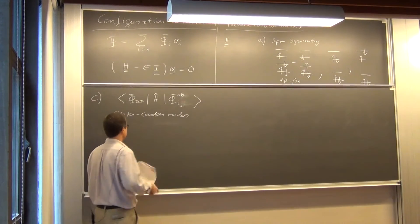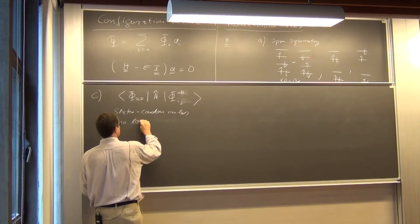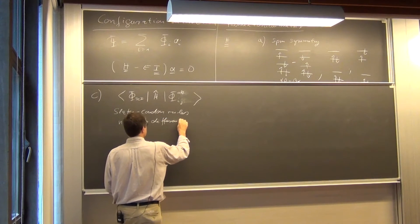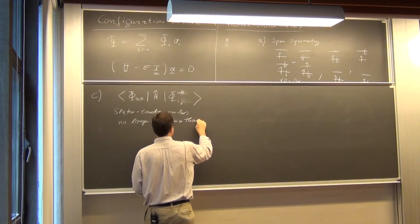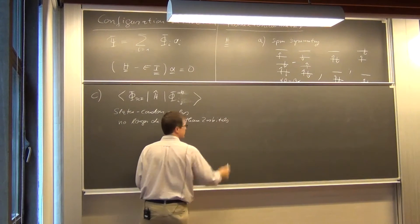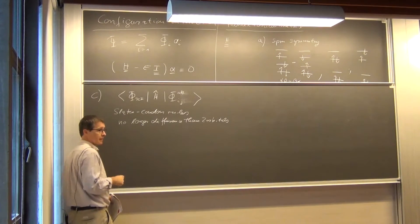And then we can sort of let that continue. So that's the Slater-Condon rules. No larger difference than two orbitals. That's sort of the quintessence.